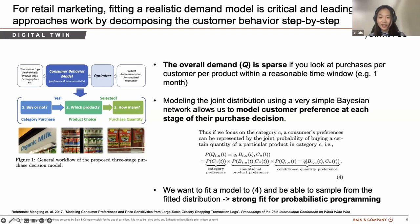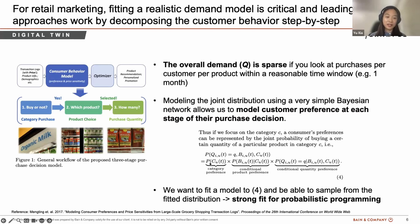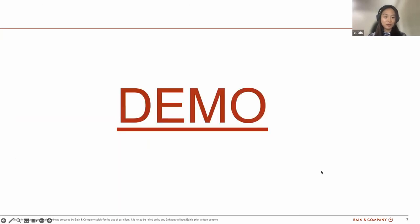The joint distribution is simply the product of these three components — formula four. The ideal outcome of this modeling approach is to derive the demand distribution that captures the sparsity of our overall demand and accurately represents the decision process. That's exactly where we found probabilistic programming to be a strong fit.